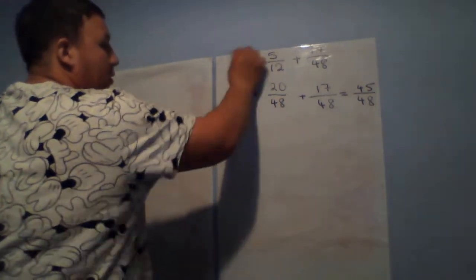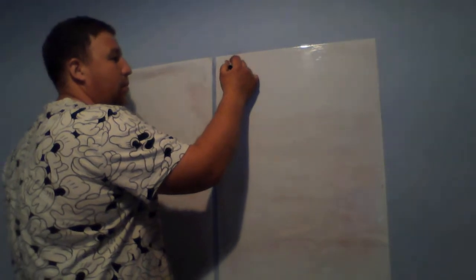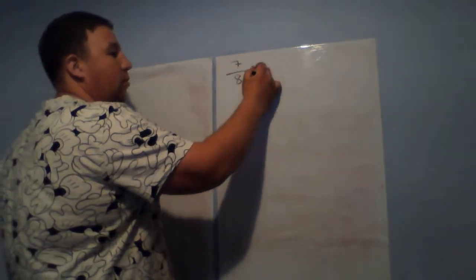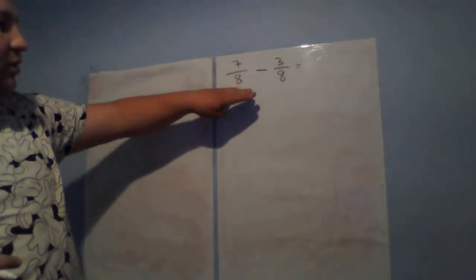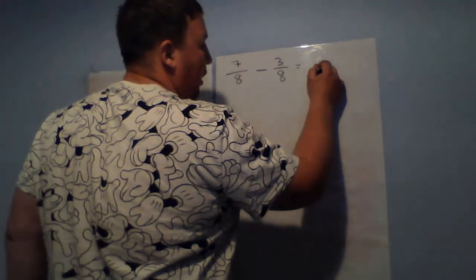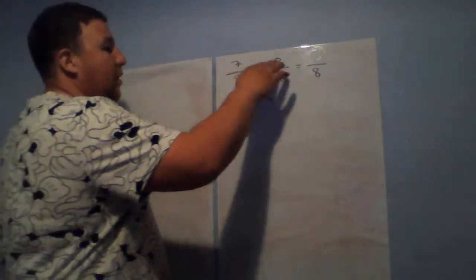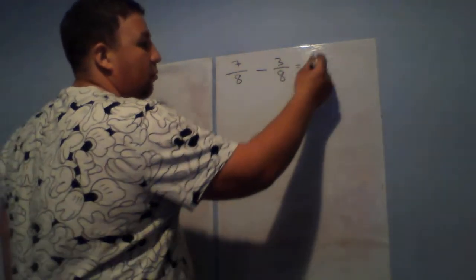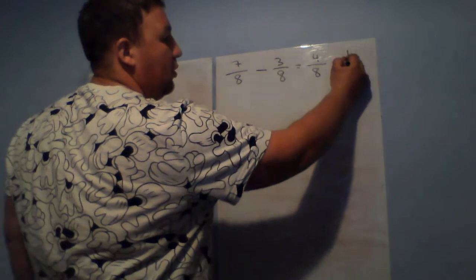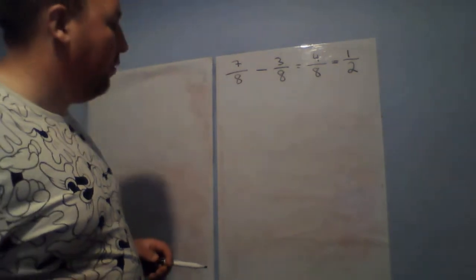I'll do a minus now as well. So for example, 7 over 8 minus 3 over 8. This is the same as the addition in the fact that the 8 just stays in the bottom — you don't have to do anything with that. It stays the same the whole way across. So 7 minus 3 is 4 over 8. Can I simplify that? Is there a number that will go into both? Four will go into 4 once and 4 will go into 8 twice — so this is equal to a half.